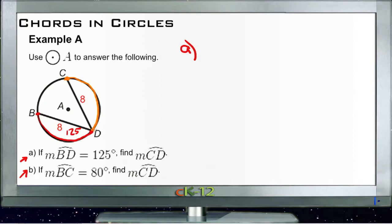This just uses the theorem. It tells us that since the chord CD is the same as the chord BD, that means the associated arcs are also the same. So if the arc BD is 125 degrees...